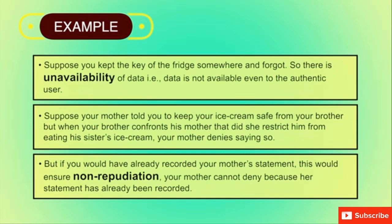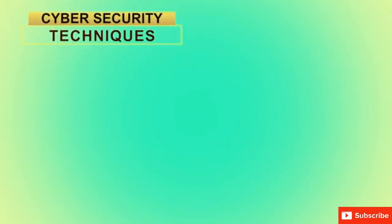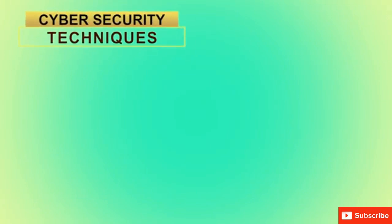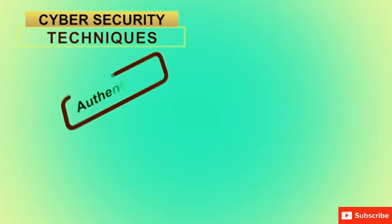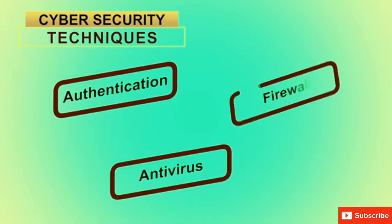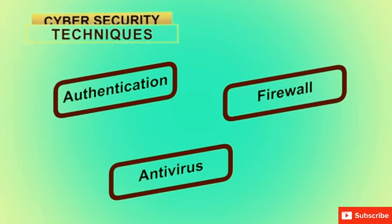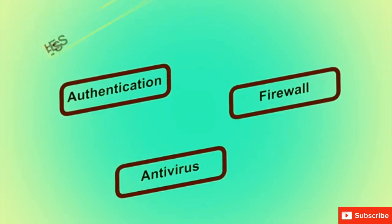I hope this clears all the objectives of information security. Now let us learn about various cyber security techniques: authentication, antivirus, and firewall. These are some methods by which we can prevent cyber crimes. We will discuss these methods one by one in detail.